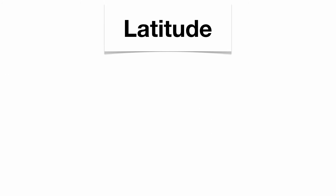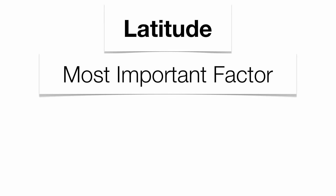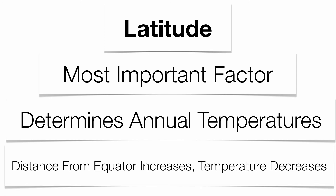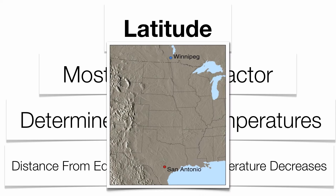The first one is latitude. Latitude is by far going to be the most important factor that influences climate. With your latitude, you're going to have a different temperature. As you increase your distance away from the equator, your temperature is going to drop. As you get closer to the North Pole or the South Pole, you're going to have a colder temperature. Take a look at this map: San Antonio has a much warmer climate because it's closer to the equator, while Winnipeg has a much colder climate because it's further away from the equator.